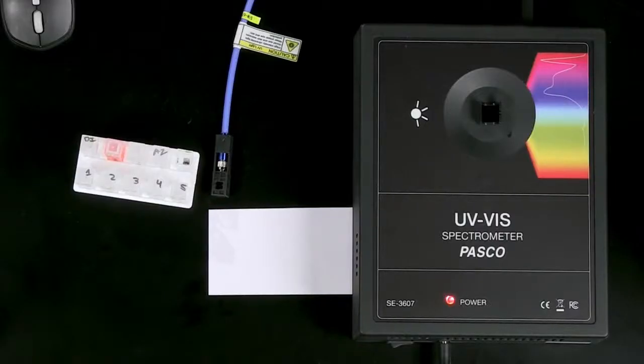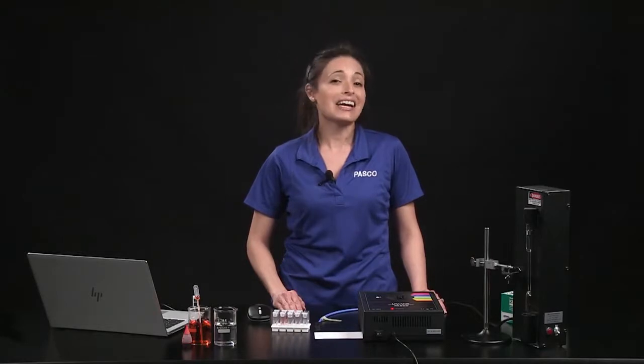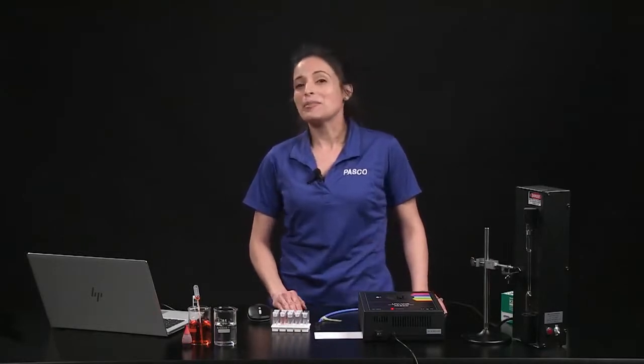The UV-VIS spectrometer has a wavelength range from 180 nanometers to 1050 nanometers. This range includes a portion of the UV range and the entire visible range and part of the near-infrared region of the electromagnetic spectrum.